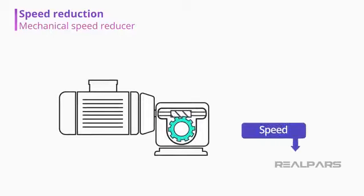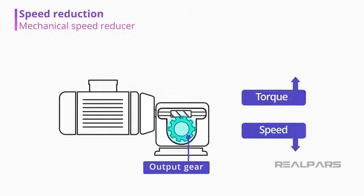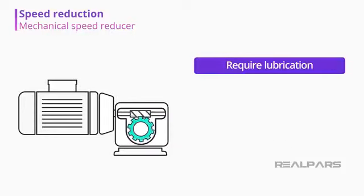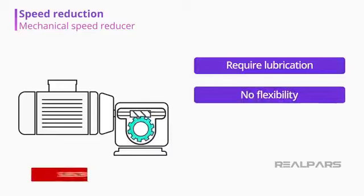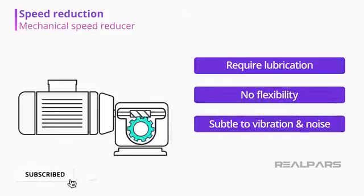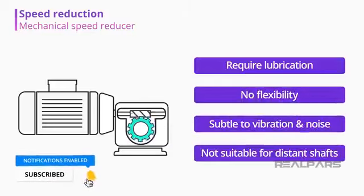It mechanically decreases the output speed by increasing torque. The output gear has more teeth than the input gear. They require lubrication, provide no flexibility, are susceptible to vibration and noise, and are not suitable when shafts are distant.